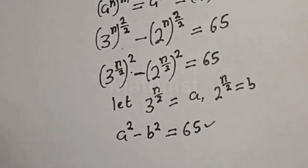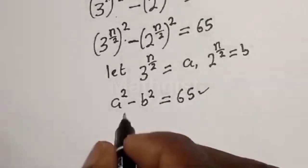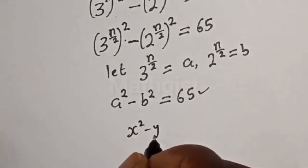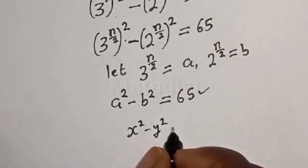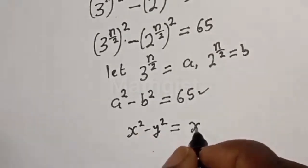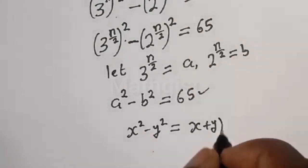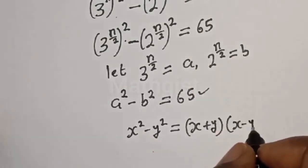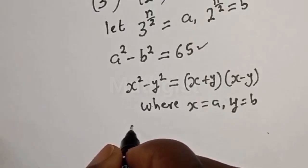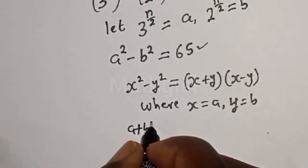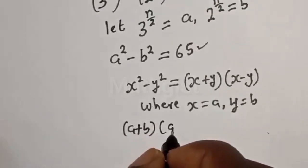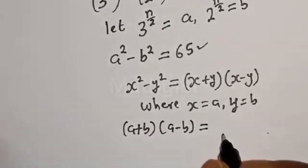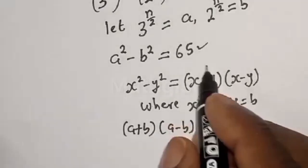This is a difference of two squares. Take note of the rule that if you have S squared minus Y squared, this equals S plus Y multiplied by S minus Y.